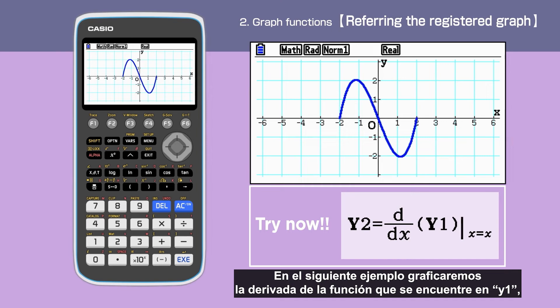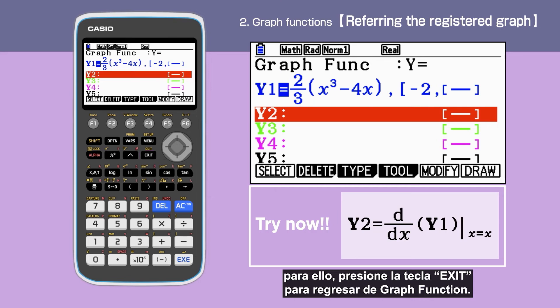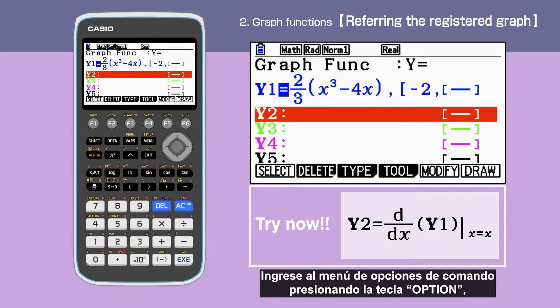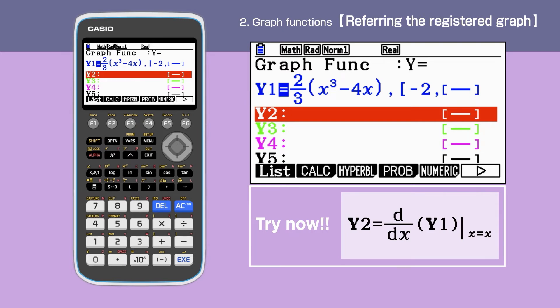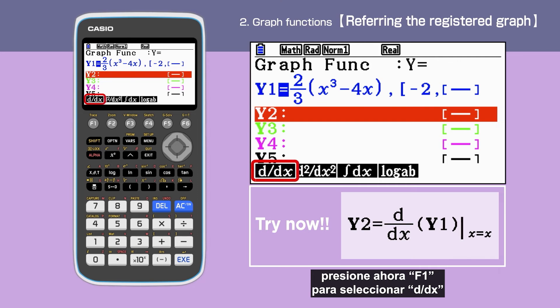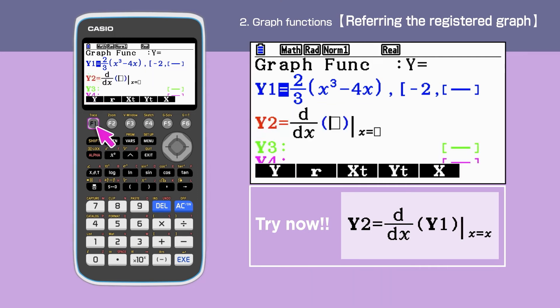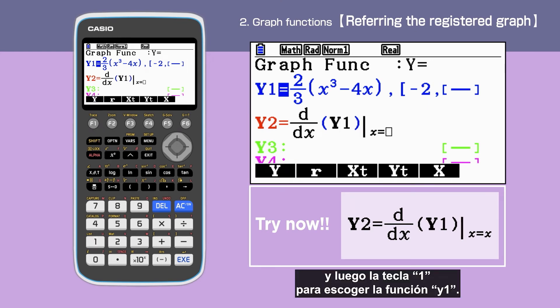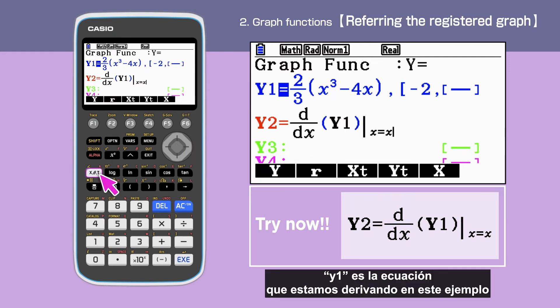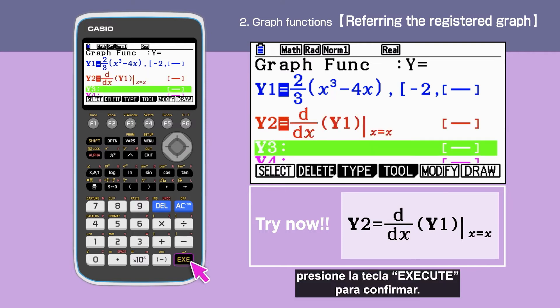Next example, we will draw the derivative function of y1. Press Exit to go back to the graph function screen. Display the option command menu by pressing the option key. Then press F2 to open the calculation command. Enter F1 to select d by dx. Then press F1, 1 to choose the function y1. Y1 is the equation we are differentiating here. Press Execute to confirm.